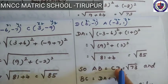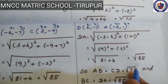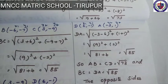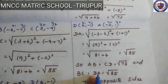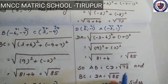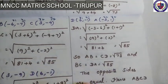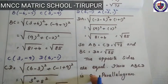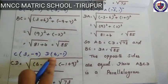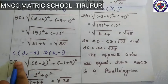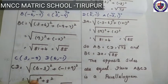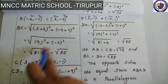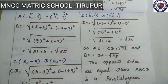So AB = CD = √73 — two opposite sides are equal. And BC = DA = √85 — the other two opposite sides are equal. So the opposite sides are equal. Hence ABCD is a parallelogram.